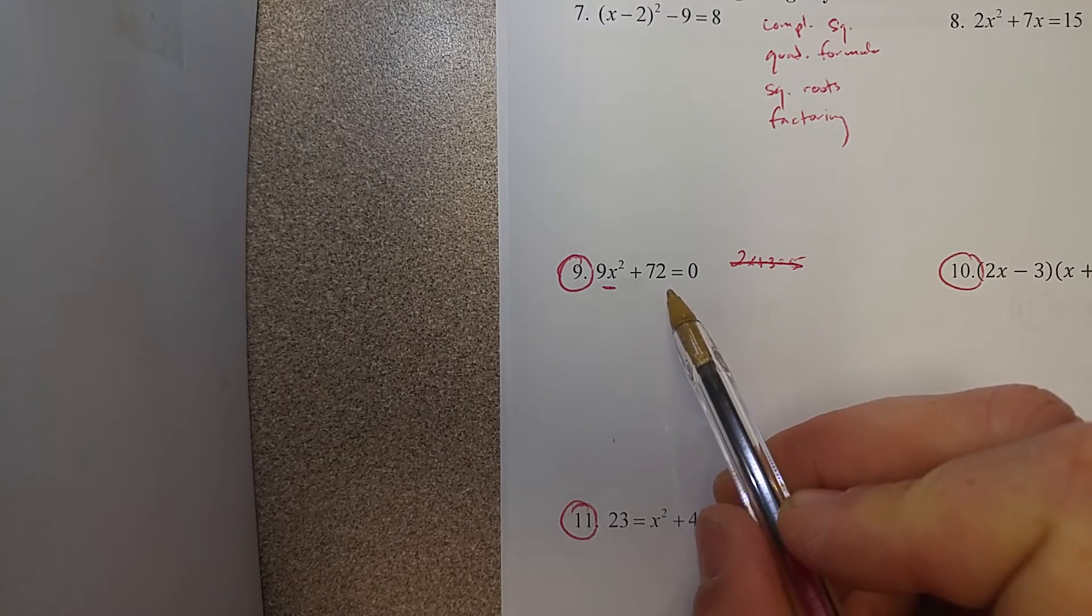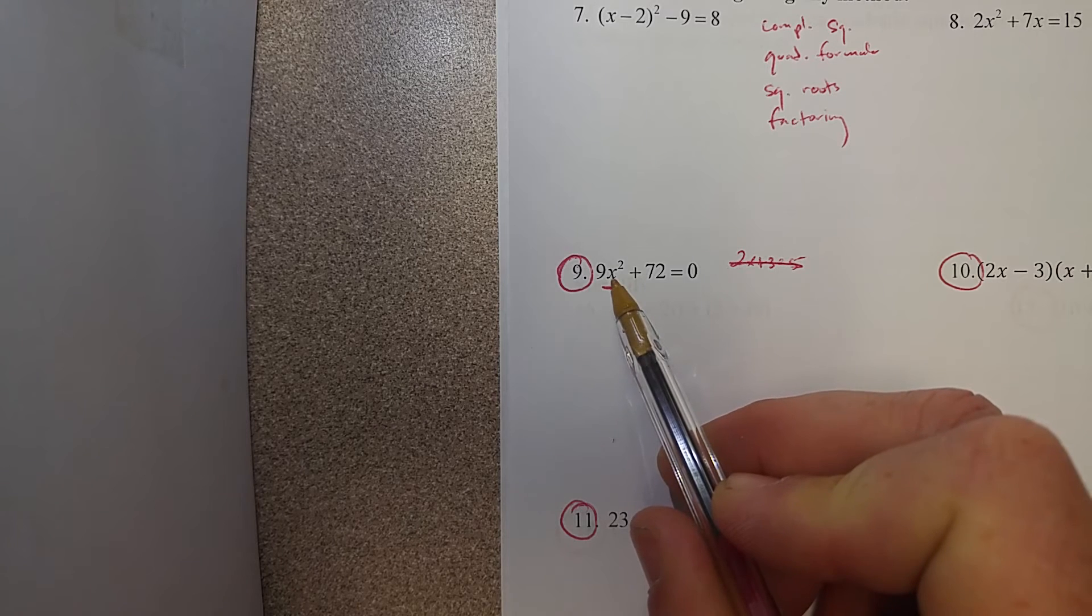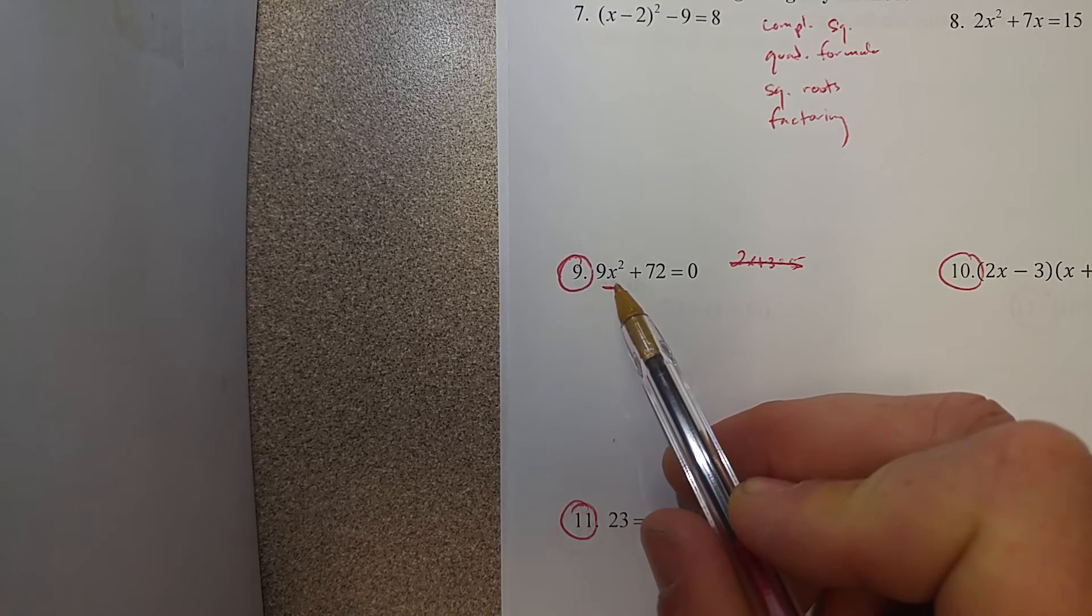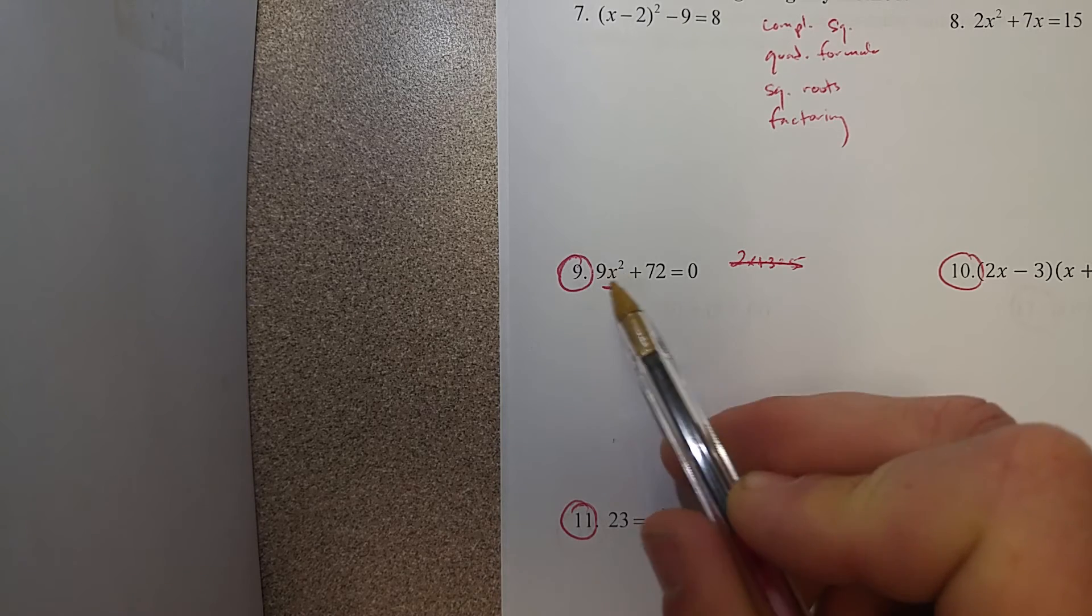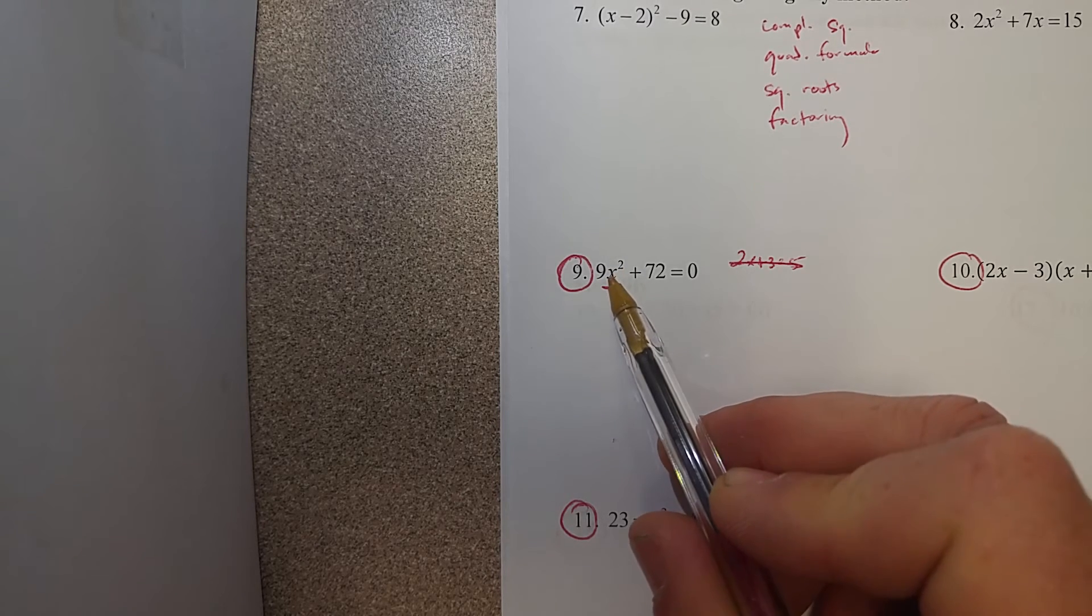We're going to take this equation and do opposite operations, basically undoing everything around the x squared. The reason we're doing that is because there's only one x to solve for - it just happens to be squared. We don't have two different kinds of x's here.